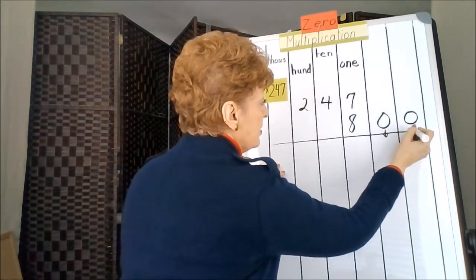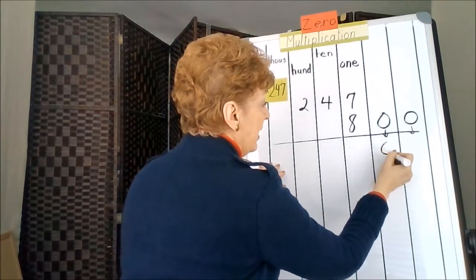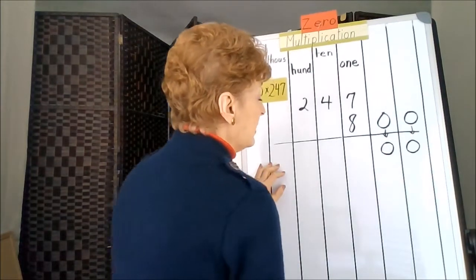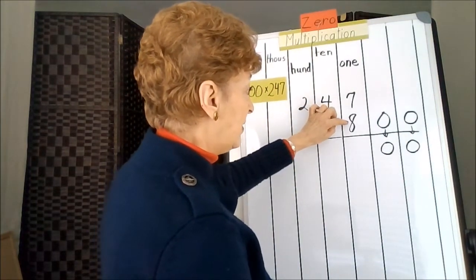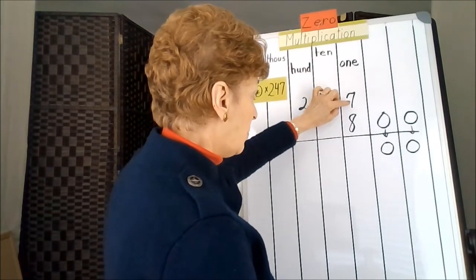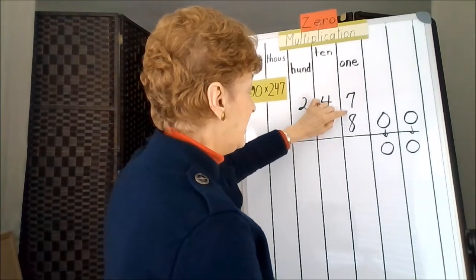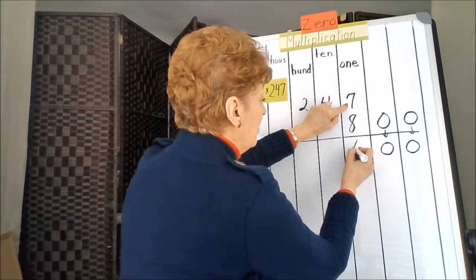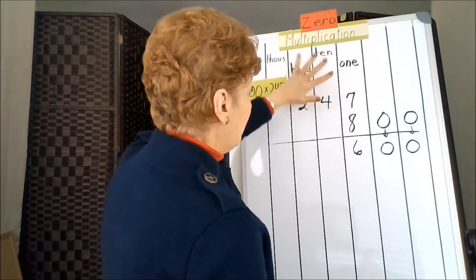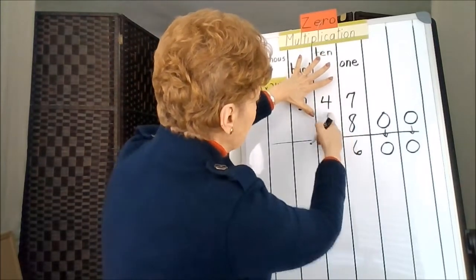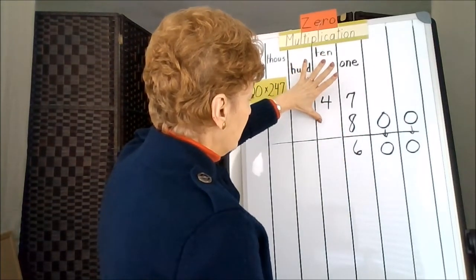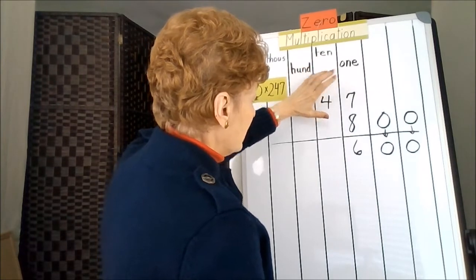I'm going to drop these completely into the answer and start multiplying by my 8. 8 times the 1, 8 times the 10s, 8 times the 100s. 8 times 7 is 56. Put down the 6, I'll carry the 5. 8 times 4 is 32, 33, 34, 35, 36, 37. I'll put down the 7.